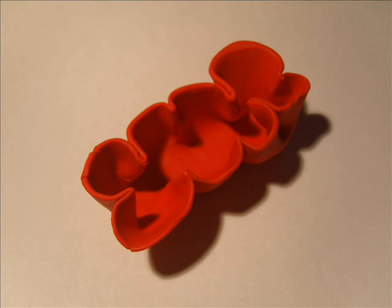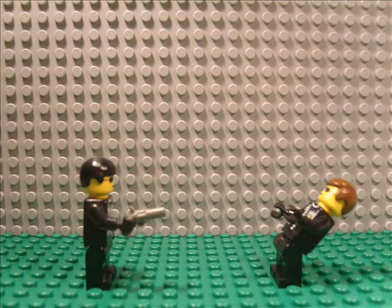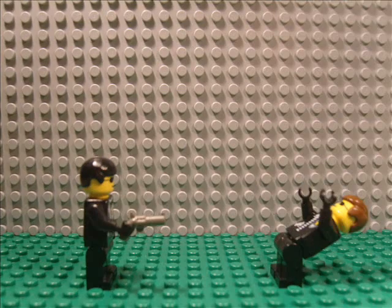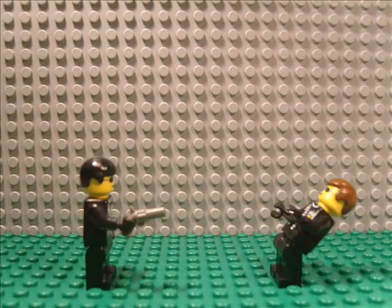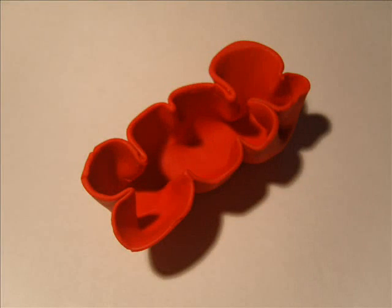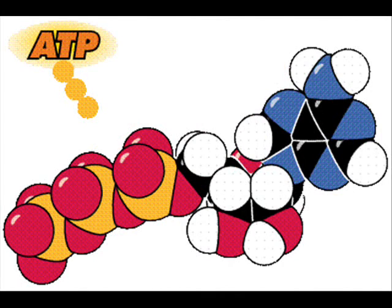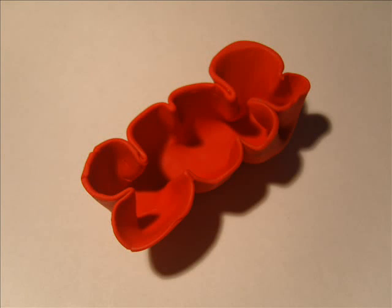When the inner membrane is opened up, you can see that it has lots of room in it. This space is called the matrix. One of the main functions within the matrix is the production of ATP, with the aid of ATP synthase contained within it.